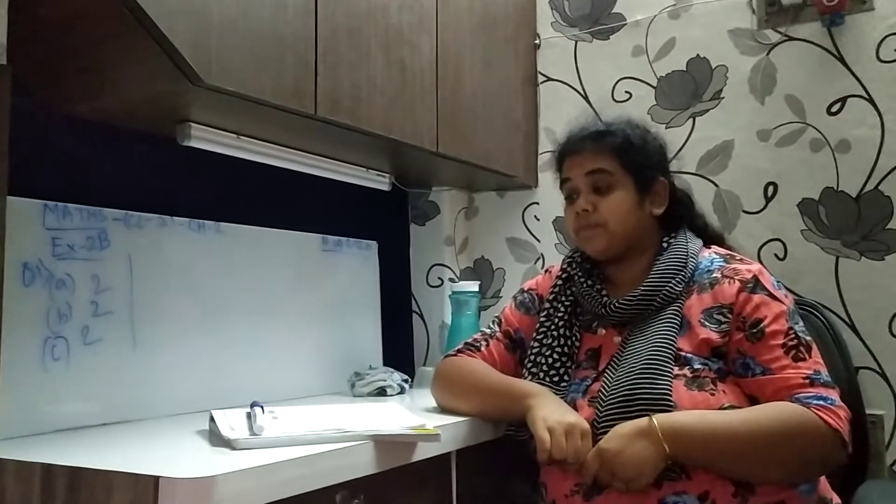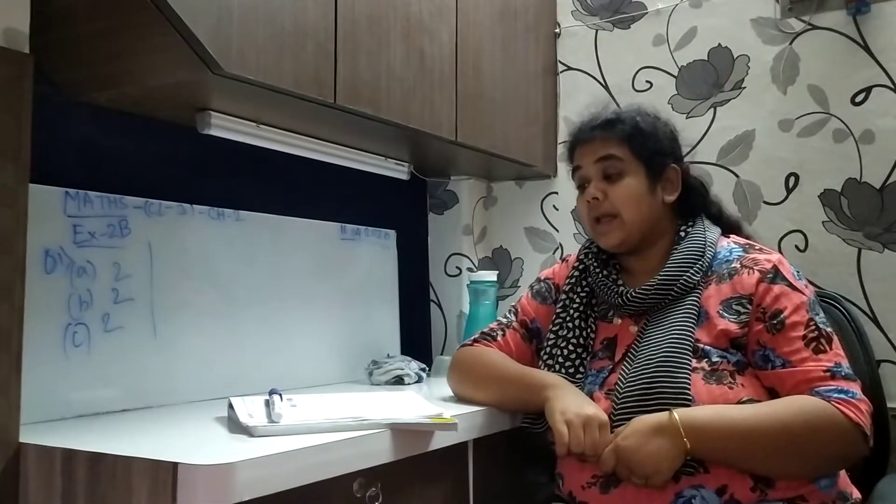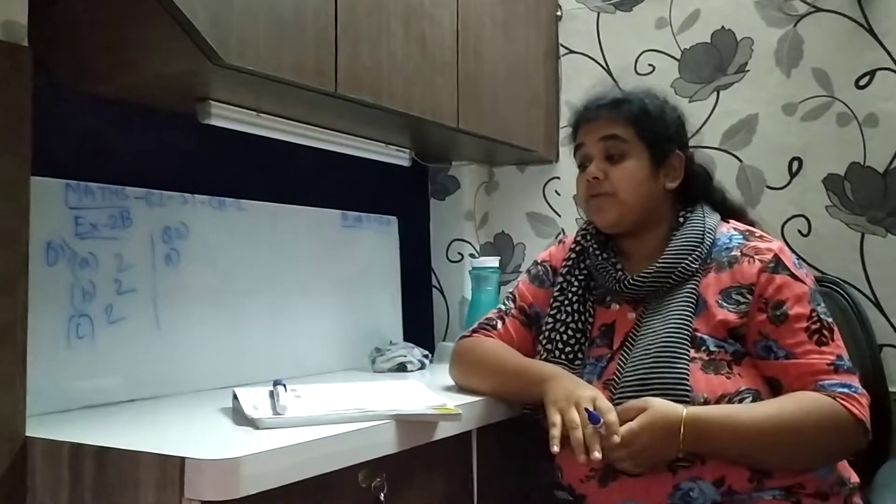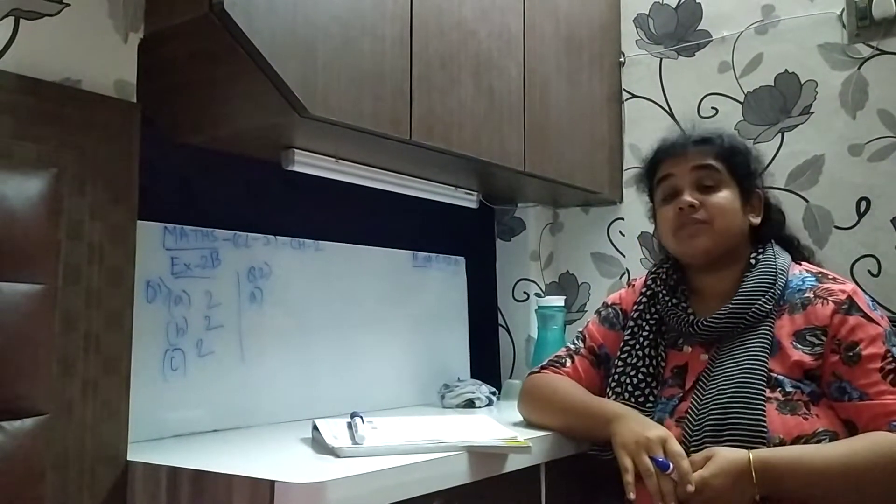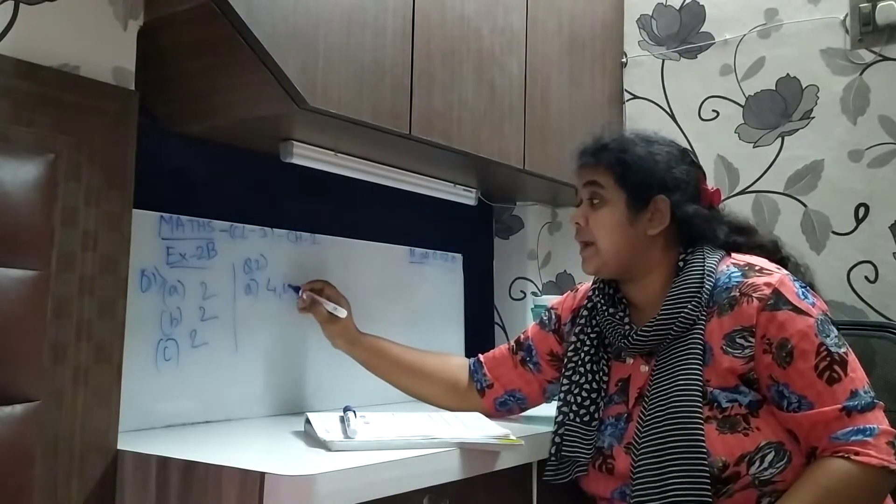Now, coming to the next sum. That is, write the face value of the underline digit. Question number 2A, 54,780. The underline digit is 4. So the face value of 4 is 4,000.